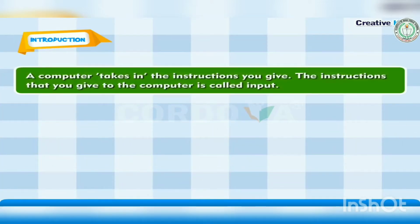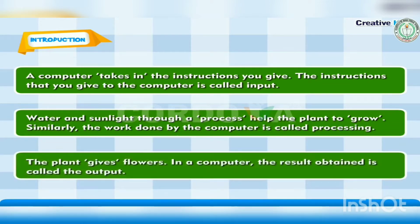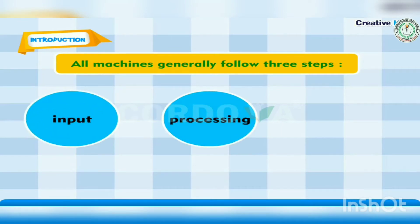A computer takes in the instructions you give. The instructions that you give to the computer are called input. Water and sunlight through a process help the plant to grow. Similarly, the work done by the computer is called processing. The plant gives flowers. In a computer, the result obtained is called the output. All machines generally follow three steps: input, processing, output.